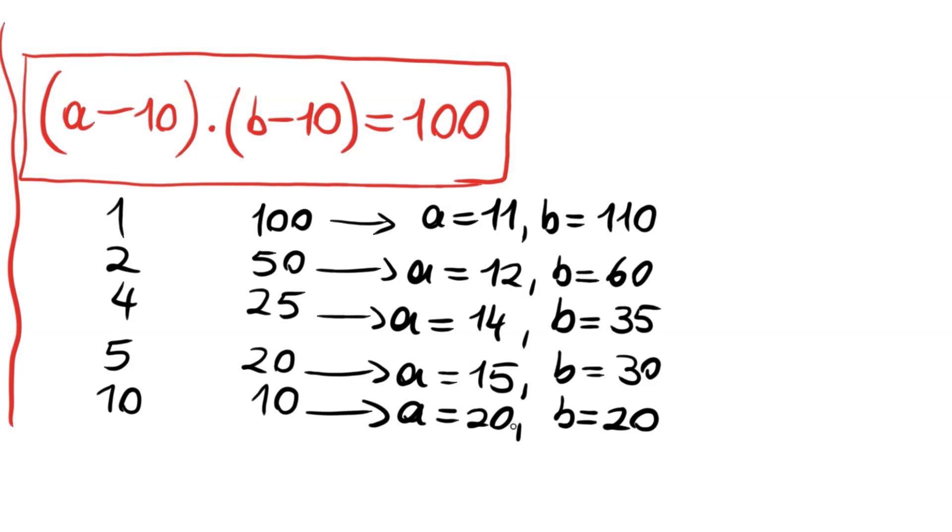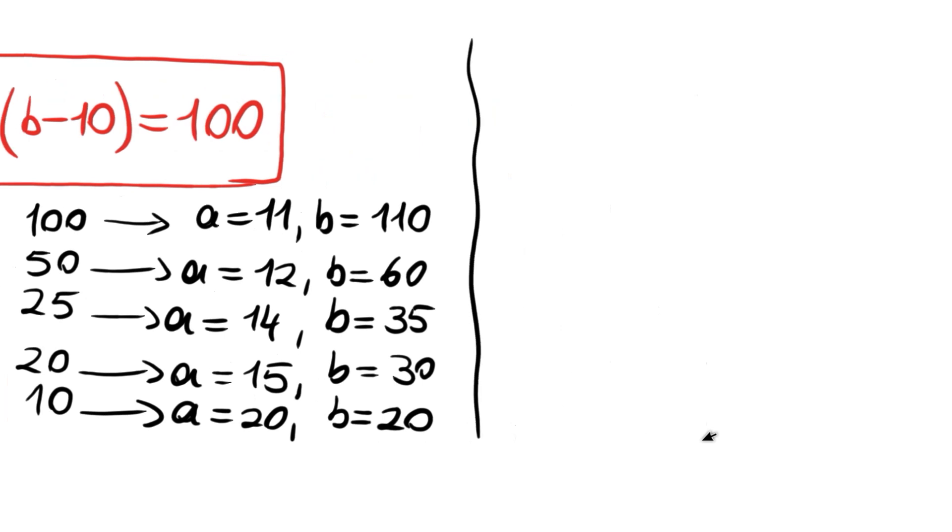Actually, the symmetries are also true. Let me write: a may be 30, b may be 15. A maybe 35, b may be 14.